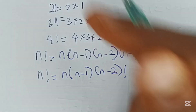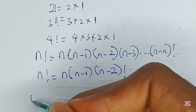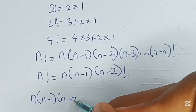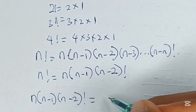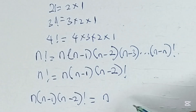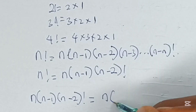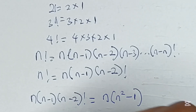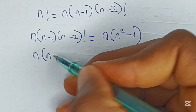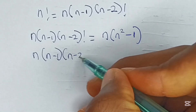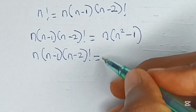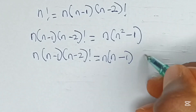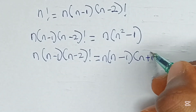Let's replace this with n here. So we are going to have that n into n minus 1 into n minus 2 factorial is equal to, factoring this, we have n into n squared minus 1. Now, using the difference of two squares, we have n minus 1 into n plus 1.